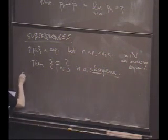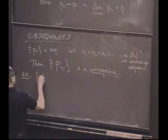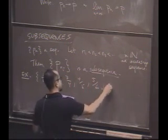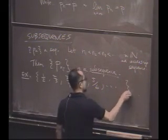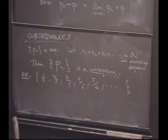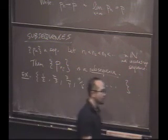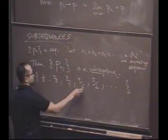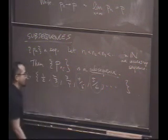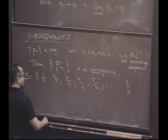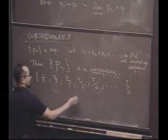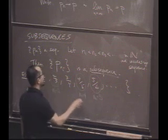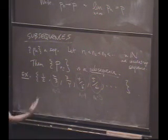Let's do an example. Here's one: 1/2, 2/3, 3/4, 4/5, 5/6, ... This is a sequence. A subsequence is basically picking out some sequence that's a subset of the previous sequence. Like maybe n1 might be the second term, n2 is the fourth term, n3 is the fifth term. So this is P sub 2, P sub 4, P sub 5 — it picks out a subsequence. It's just what you think a subsequence ought to be.